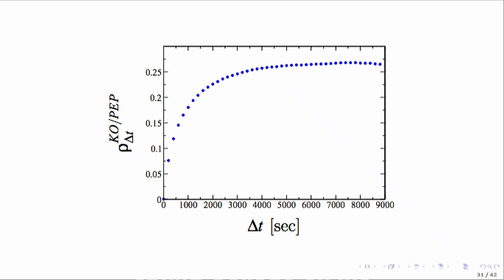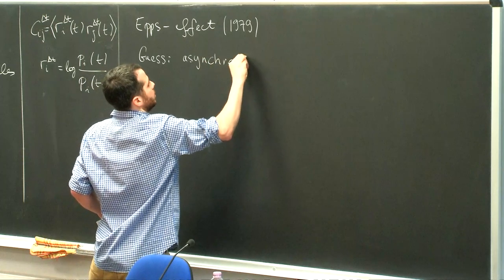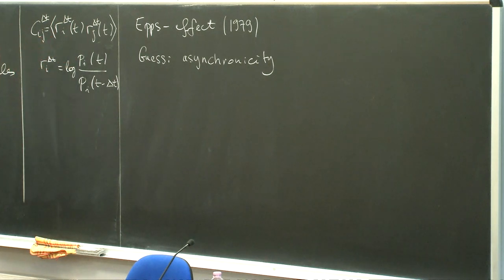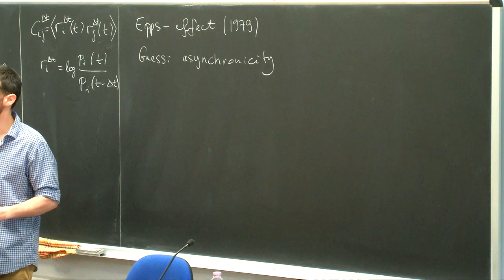So what causes this? One guess is somehow the question of asynchronicity. By asynchronicity I mean that we are looking in these windows at returns, but of course the price might not change at all in this window if the window is very small, and then you will have a lot of zeros in this average. So the correlation will go down because you're adding an enormous amount of zeros into your sum in practice - the shorter the window, the more probable that nothing happened.